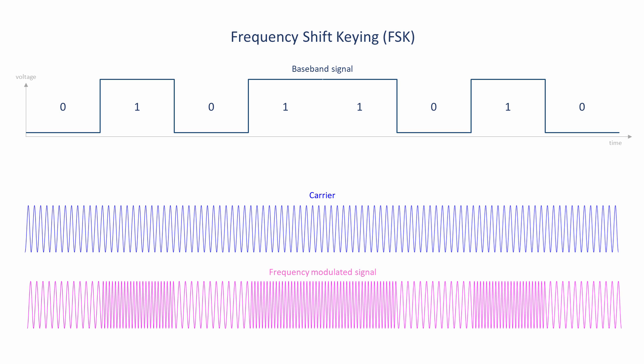Frequency shift keying is less susceptible to interference, because interference tends to affect amplitude rather than frequency. The obvious downside, however, is the increased bandwidth of an FSK signal.